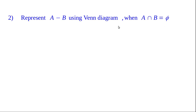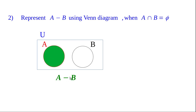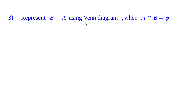The second example: represent A minus B using a Venn diagram when A intersection B equals empty set. This means the sets are disjoint. We want to shade the portion A minus B — elements in A which are not in B. Since no element of A is in B, A minus B represents the whole portion of A. We already discussed that when A intersection B equals empty set, A minus B equals A.